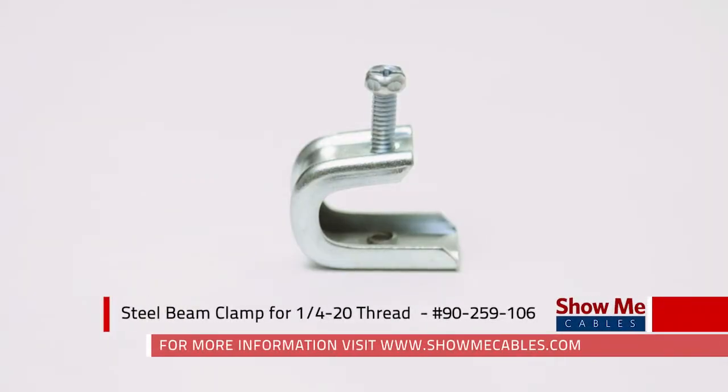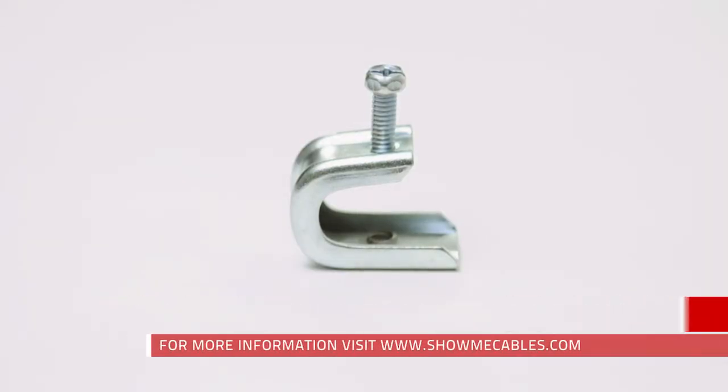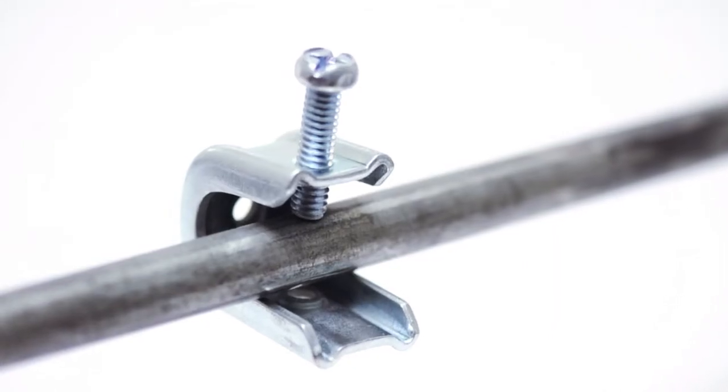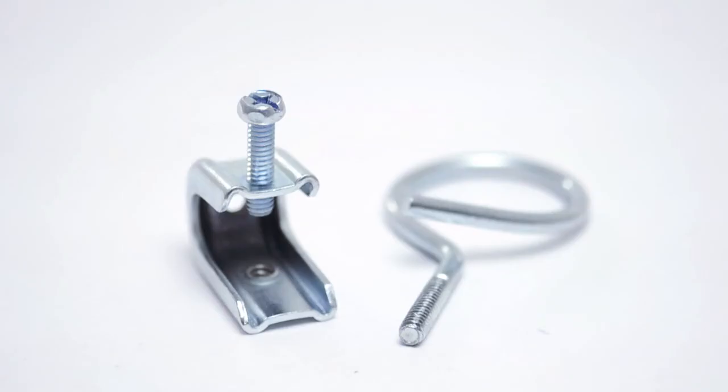Beam clamps are one of the most popular ways to distribute low voltage cable. They securely grip beams, purlins, channels, or angle iron and provide a threaded hole to mount bridle rings.